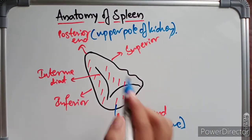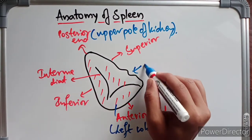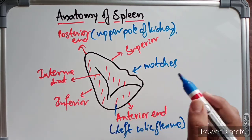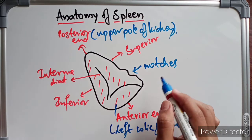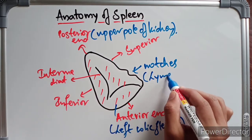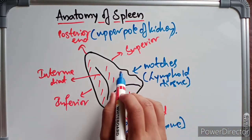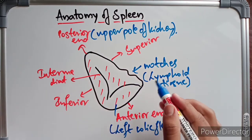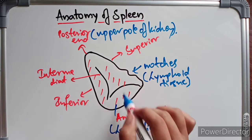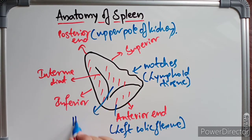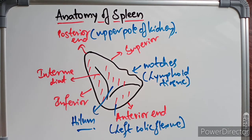The superior border has notches because the spleen develops by fusion of separate masses of lymphoid tissue, indicating its lobulated development. We also have the inferior border and the intermediate border. Near the intermediate border lies the hilum of the spleen.